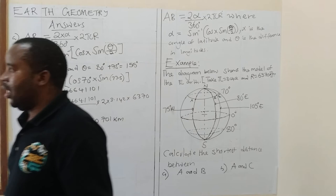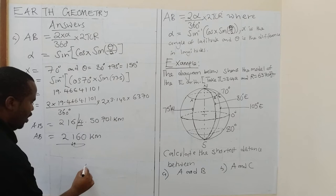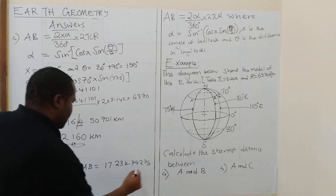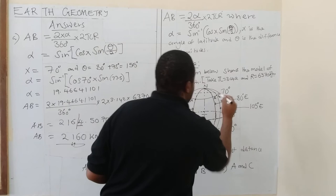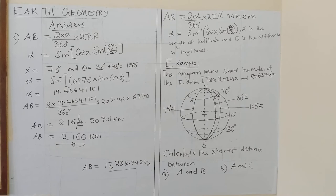That is the shortest distance. But the actual distance, when you calculate it, you get approximately 17,234.7 kilometers. So the shortest is 2160 km, while the actual distance between A and B is about 17,234 km. You get the shortest distance by moving along the great circle. So let's look at the second problem.